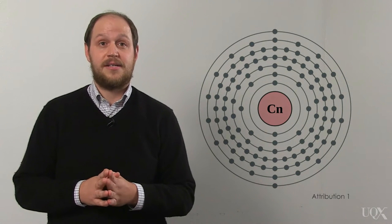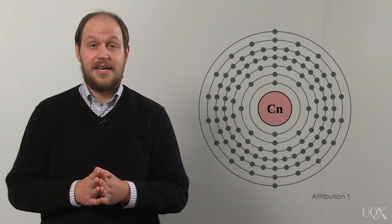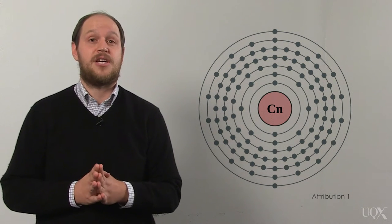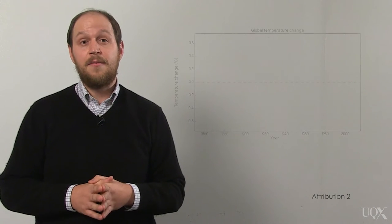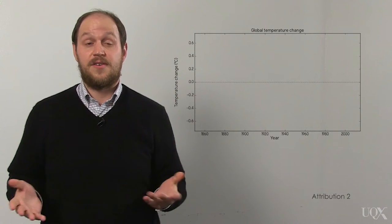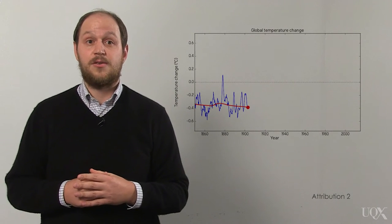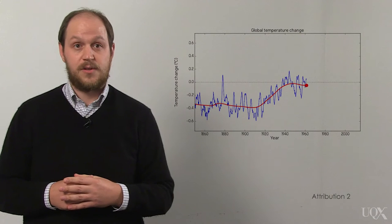Copernicium is a very radioactive element and is unstable. It has a half-life measured in seconds, but it's a powerful demonstration that humans are capable of changing the world around them. Some of these changes, like the creation of Copernicium, are fleeting. Others, like the way we're changing the Earth's atmosphere and climate, can shape the world far into the future.